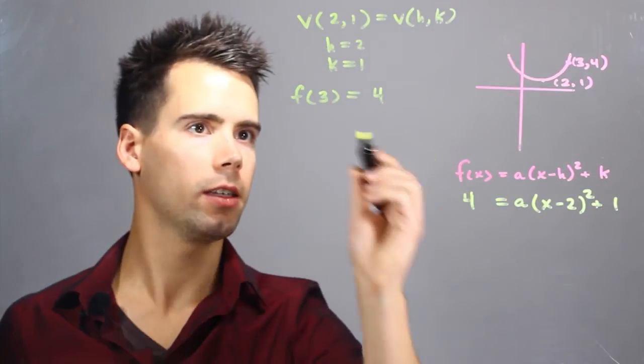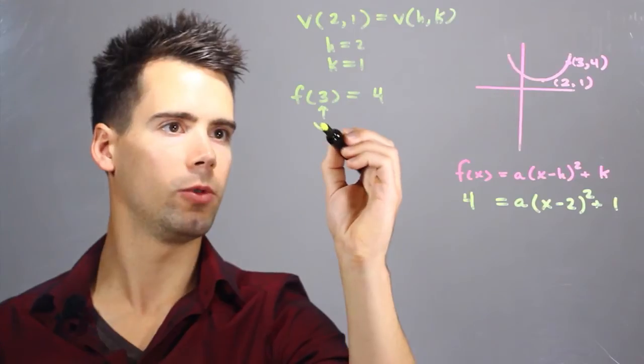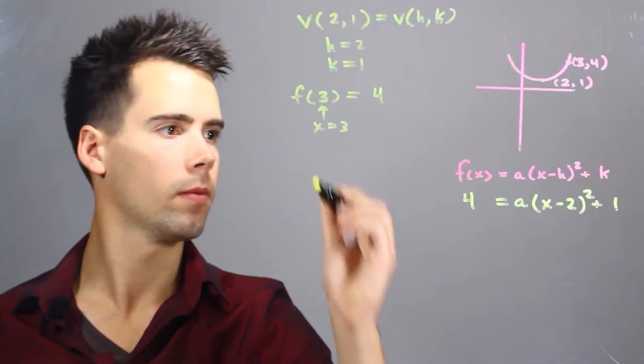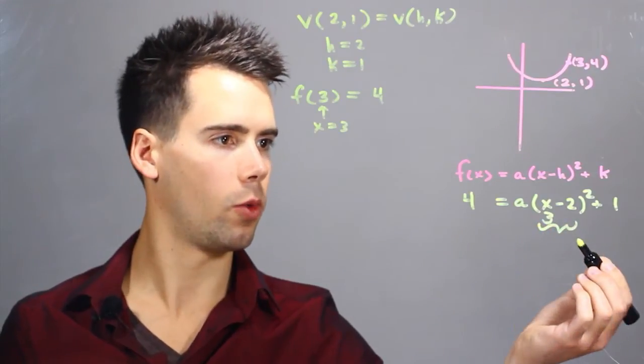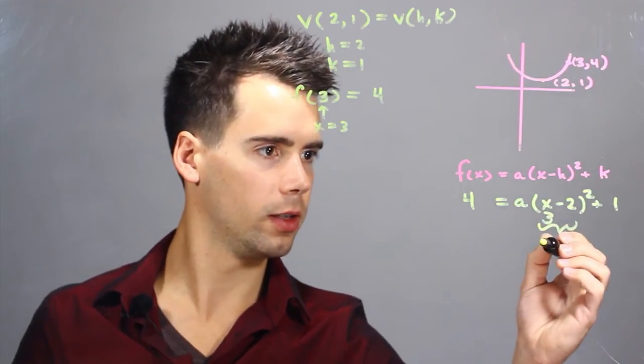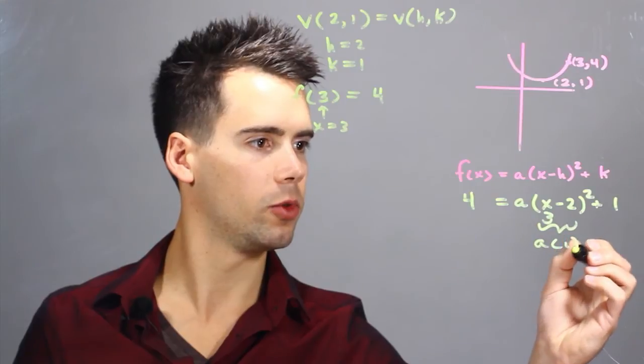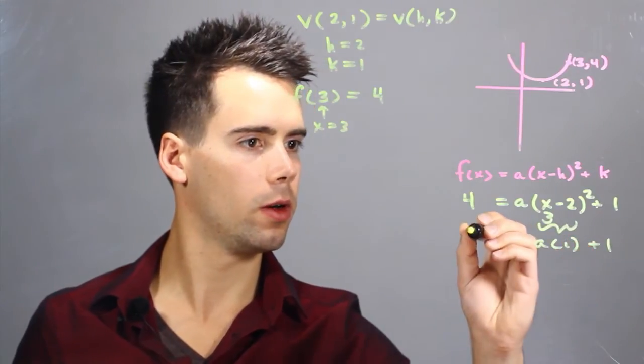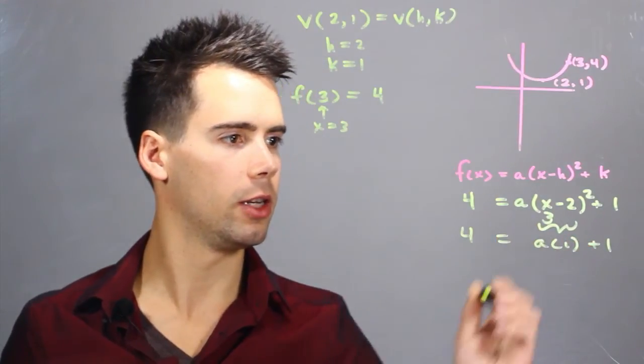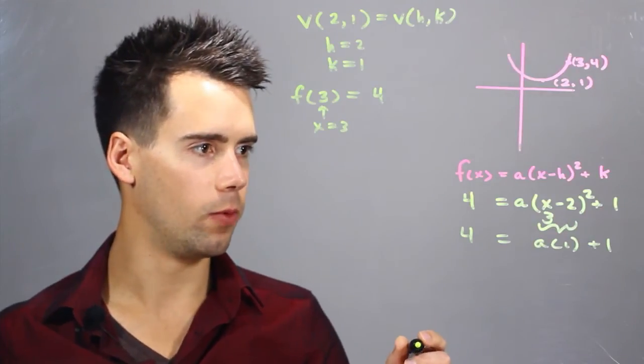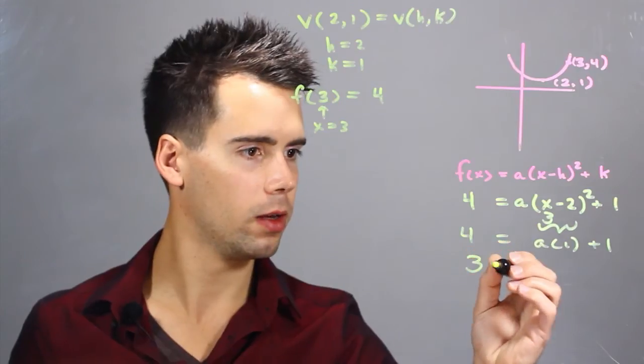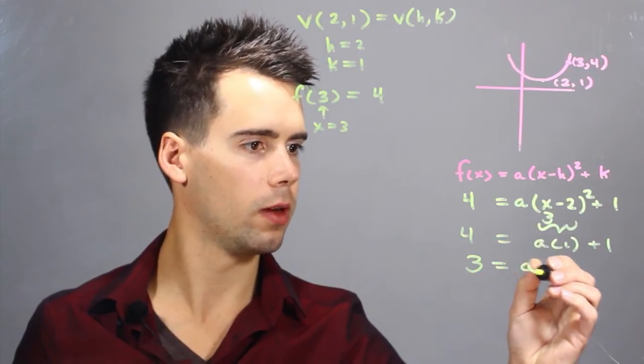Now we also know that x equals 3 and this whole term right here just becomes 1 squared. So this is simply a times 1 plus 1 equals 4, and we can solve for a by subtracting 1 from both sides and we find that 3 is equal to a.